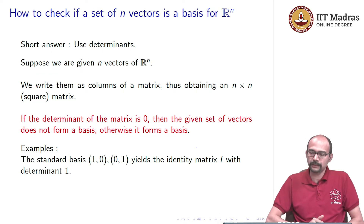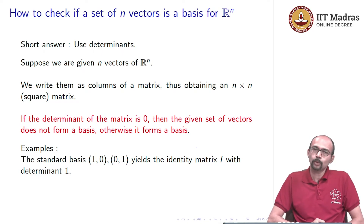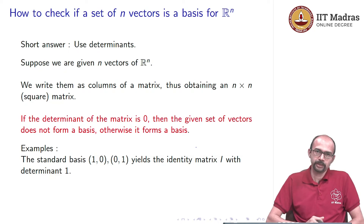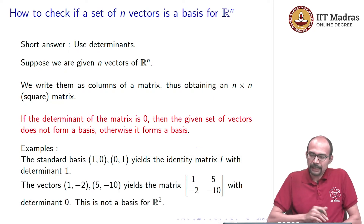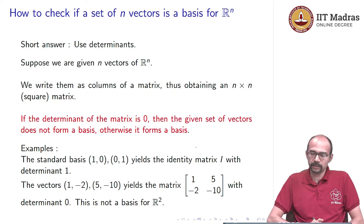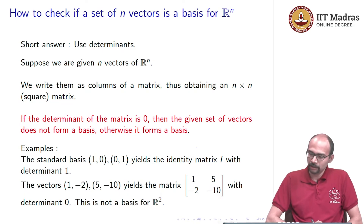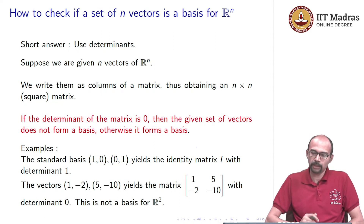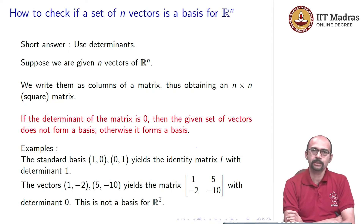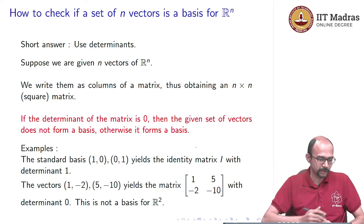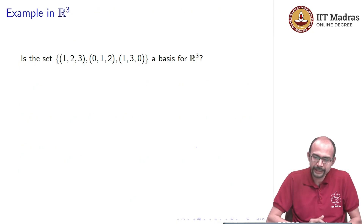Let us do quick examples. In R^2, take the standard basis 1 0 and 0 1. The corresponding matrix is the identity matrix, its determinant is 1 which is nonzero, and indeed this forms a basis. Now take the vectors 1, minus 2 and 5, minus 10. This gives the matrix with first column 1, minus 2 and second column 5, minus 10. The determinant is 0 — as expected, since these are scalar multiples of each other — so this is not linearly independent and cannot form a basis.